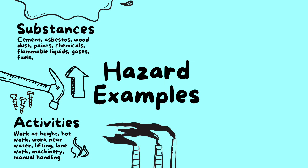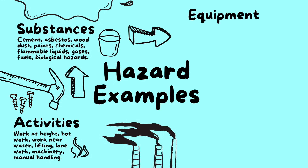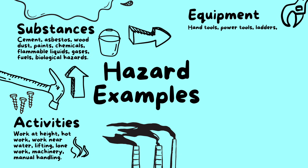Examples of hazardous substances and materials include cement, asbestos, wood dust, paints, chemicals, flammable liquids, gases, fuels, and biological hazards.